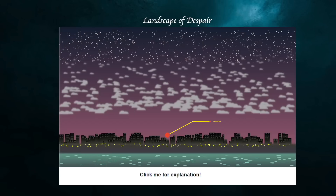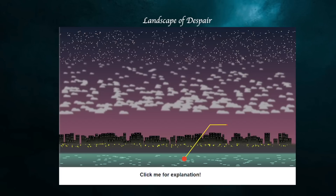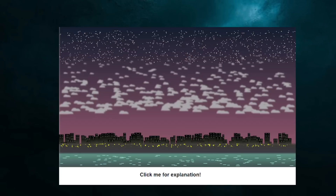For example: buildings represents jumping from heights, clouds represents taking drugs, medicine, or alcohol, waves represents drowning, stars represents strangulation, and light represents jumping in front of trains and metros. This is one of the unconventional ways to visualize data with the purpose of provoking emotions rather than showing exact numbers.